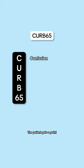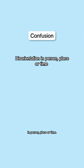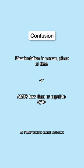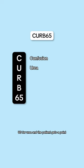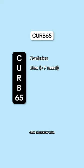C is for confusion. The patient gets a point if they're disoriented in person, place, or time, or if their abbreviated mental test score is less than 8 out of 10. U is for urea, and the patient gets a point if their urea is greater than 7 millimoles.